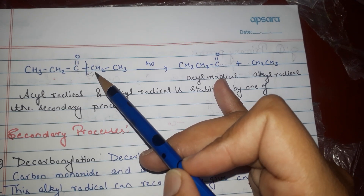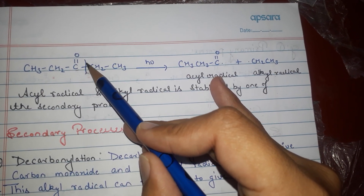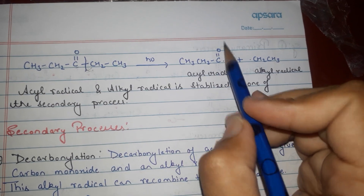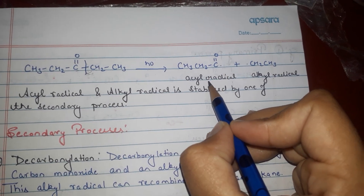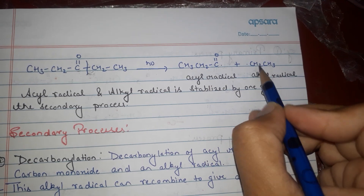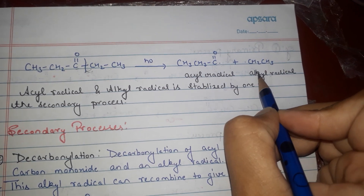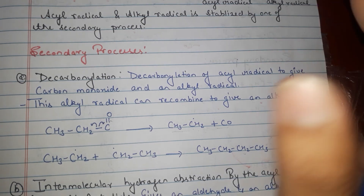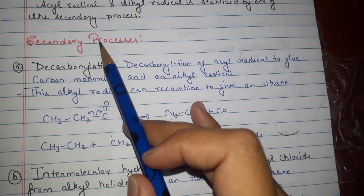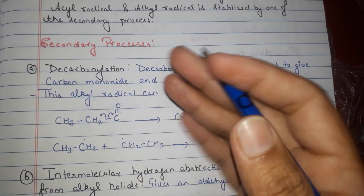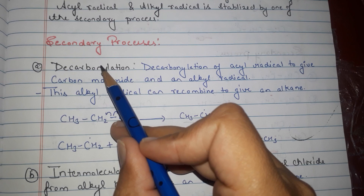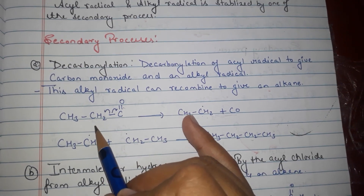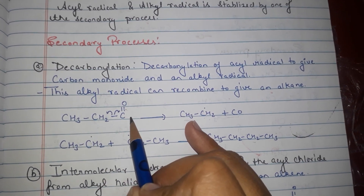In the presence of light, there is a cleavage of this alpha bond, forming an acyl radical and an alkyl radical. These radicals are then stabilized by the secondary process. The secondary process itself consists of three steps: the first is decarbonylation.